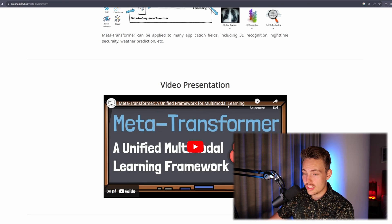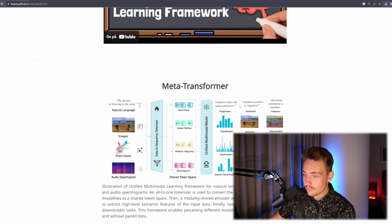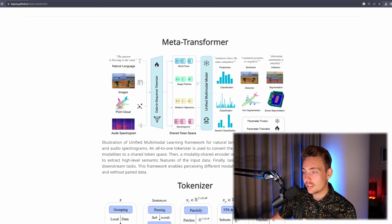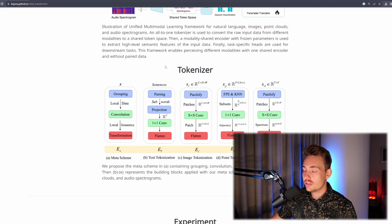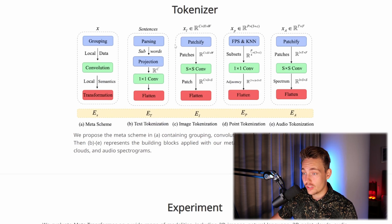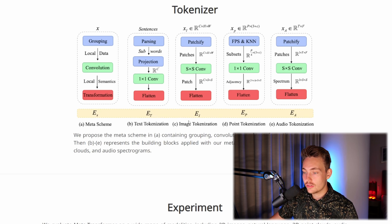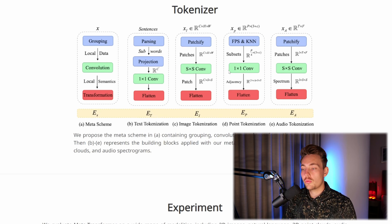We also have a video presentation going over how it works. Here we can see more details about the Meta Transformer architecture. We have these different types of inputs, our data-to-sequence tokenizer, and then this shared token space. The main objective is to get the data into the exact same space, then feed it into our model and apply different heads on top. The different tokenizers include the meta scheme, text tokenizer, image tokenizer, point tokenizer, and audio tokenizer — some of the most important ones for real-life applications.